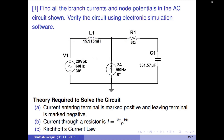Let's analyze an AC circuit by finding all the node potentials and branch currents. The calculated voltages and currents should be verified using software as well. The circuit has one inductor, one resistor, one capacitor, an alternating voltage source, and a current source.